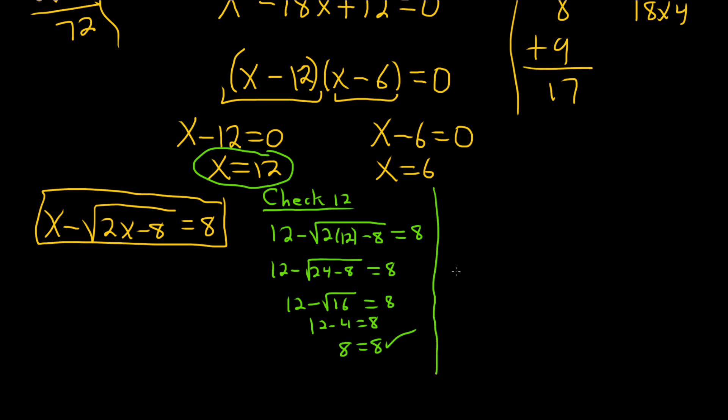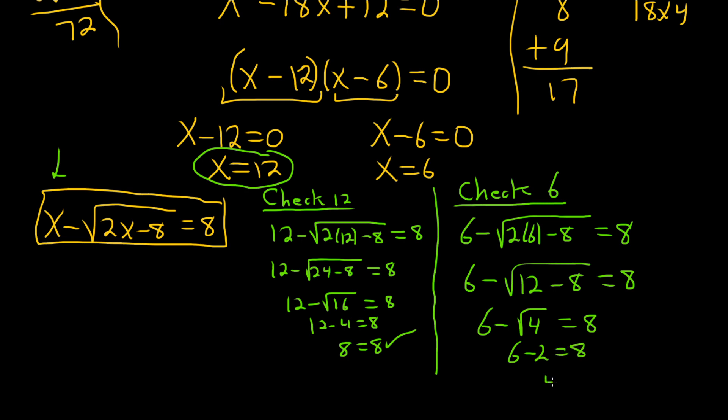Now let's go ahead and check 6. So 6 minus the square root of 2 times 6 minus 8, and that should be equal to 8. 6 minus the square root of 12 minus 8 equals 6 minus the square root of 4. 6 minus 2 is equal to 8. 4 is equal to 8. No, the world will end. No good. So it's not equal to 8. So the only answer in this case is 12.